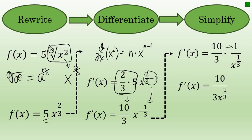These two factors can be combined, and it's simpler to write them as a single fraction: 10 over 3x to the 1/3.